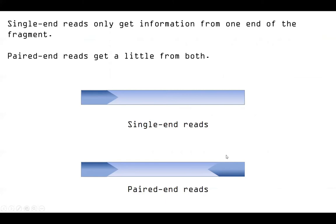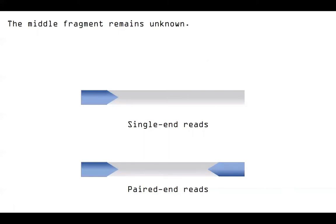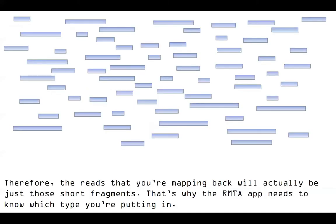The computer needs to know when you put this into the app which type you're dealing with, so it knows whether it needs to try and place a partner at the other end. If it's single-end, it won't bother looking for anything on the other side. With paired ends, it knows there's going to be a matched set. Even though all these fragments can be different lengths, the middle part of a paired-end read remains unknown. So in a single-end read we get from one end, and in a paired-end layout we get from both ends — that's why RMTA needs to know which type we're putting in.